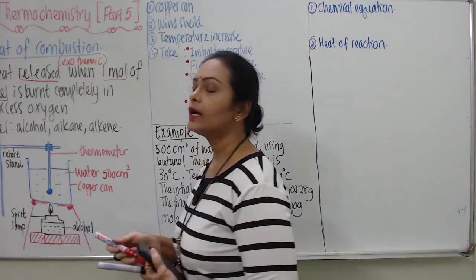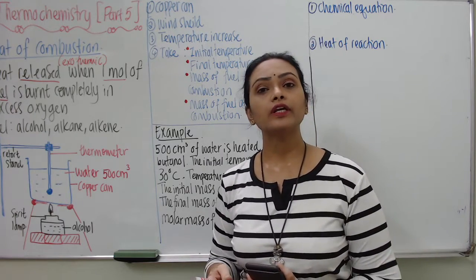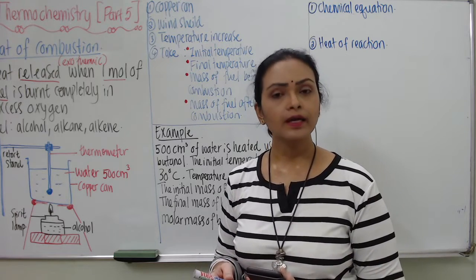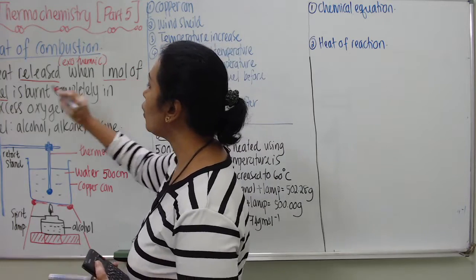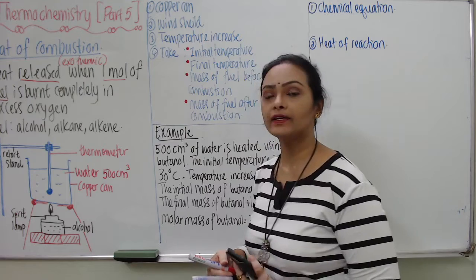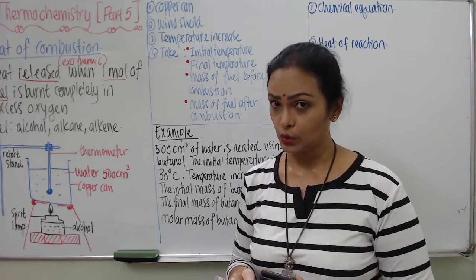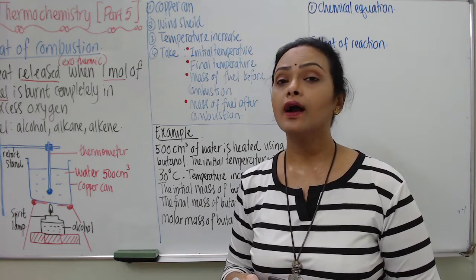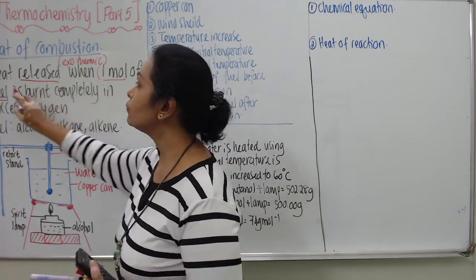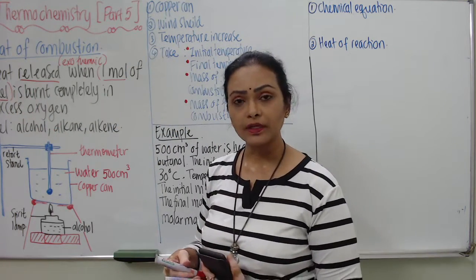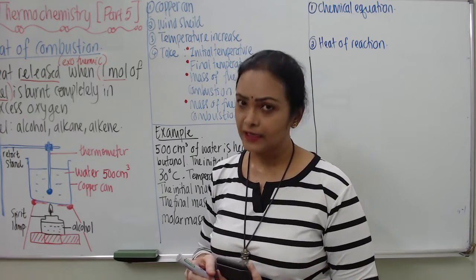When calculating heat of combustion, students need to understand the procedure of this experiment. We are taking one mole of fuel that is burned completely in excess oxygen — so we are discussing complete combustion. Complete combustion definitely produces carbon dioxide and water. For your syllabus, the fuel that will be used will typically be from alcohols, alkanes, and alkenes in liquid form.